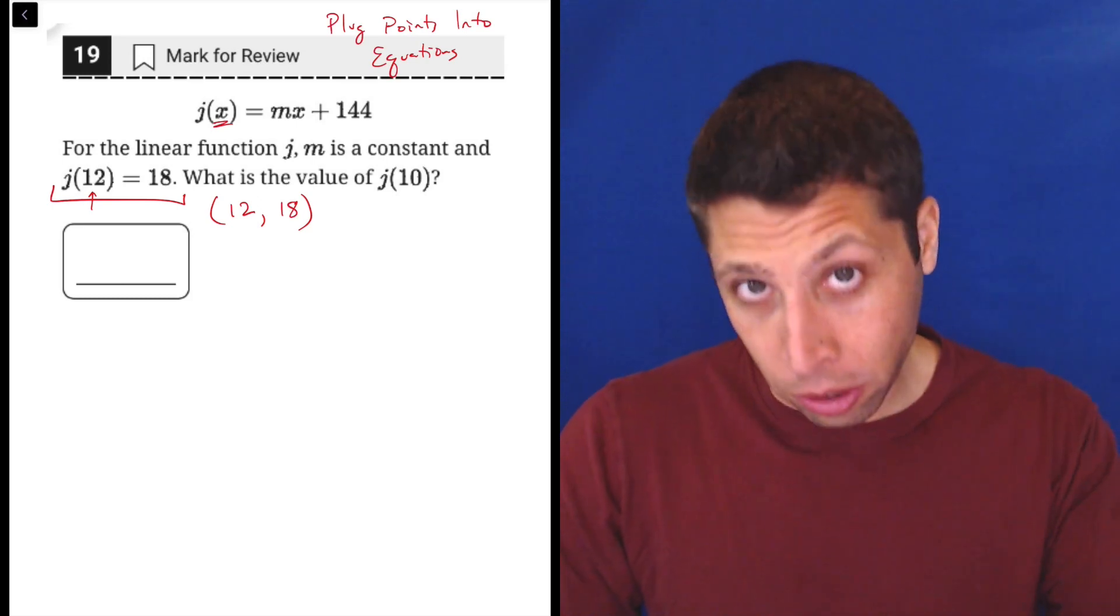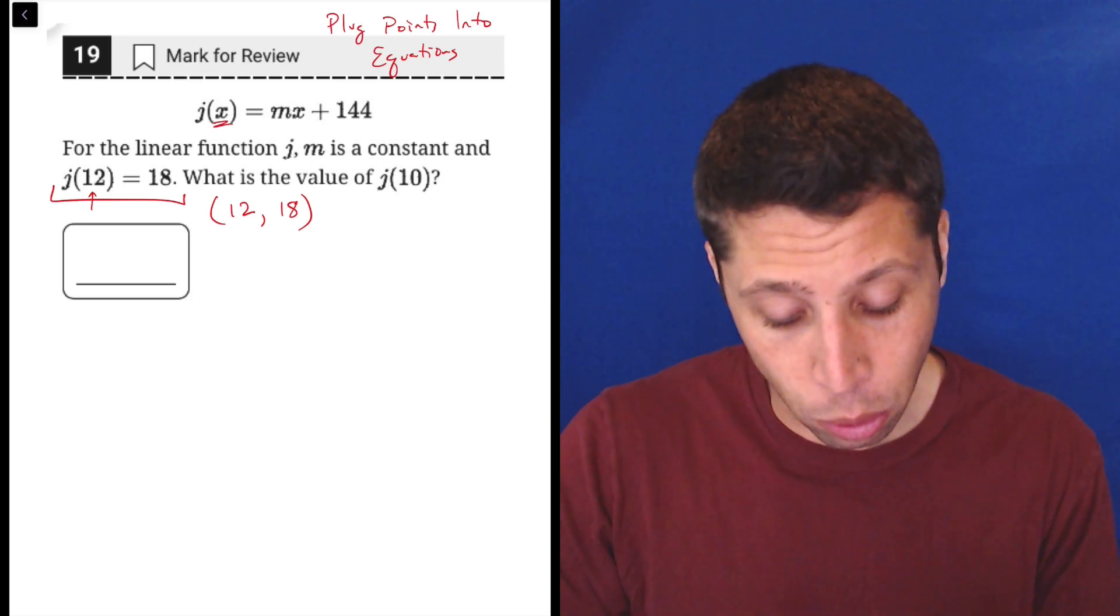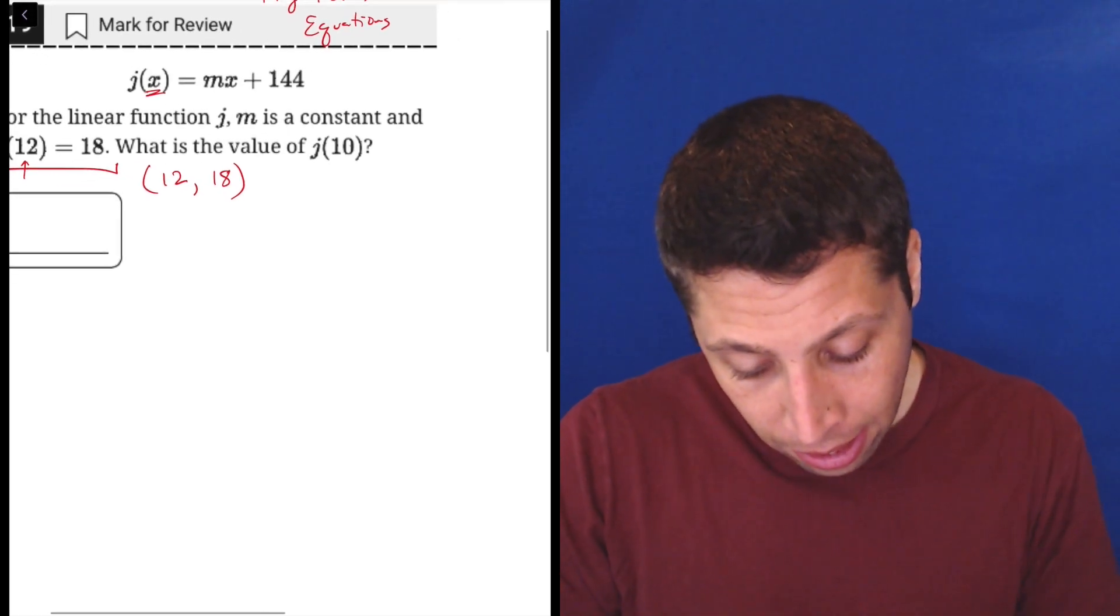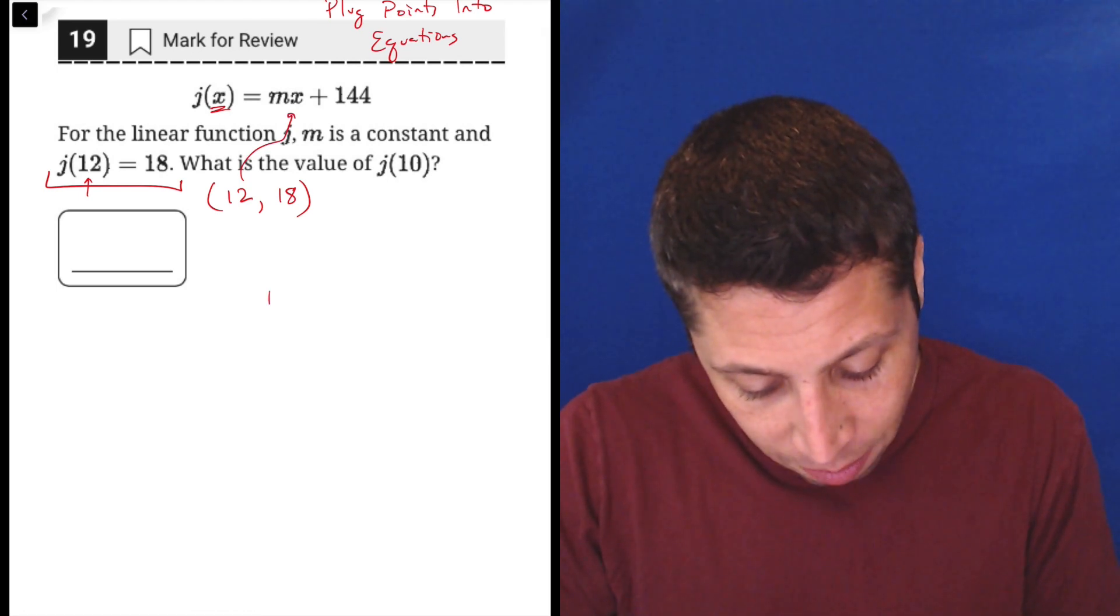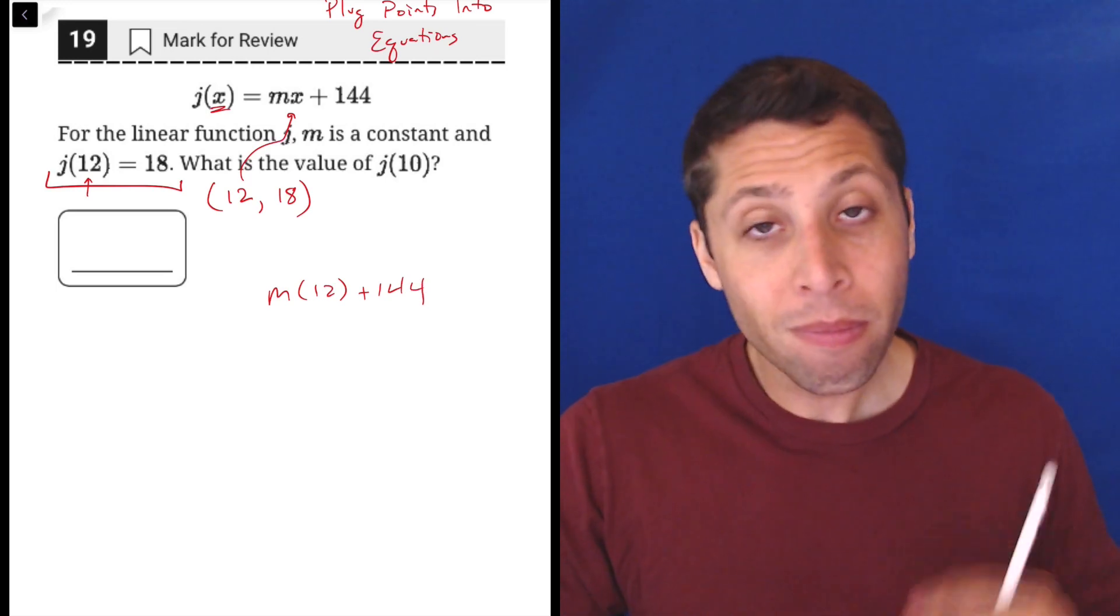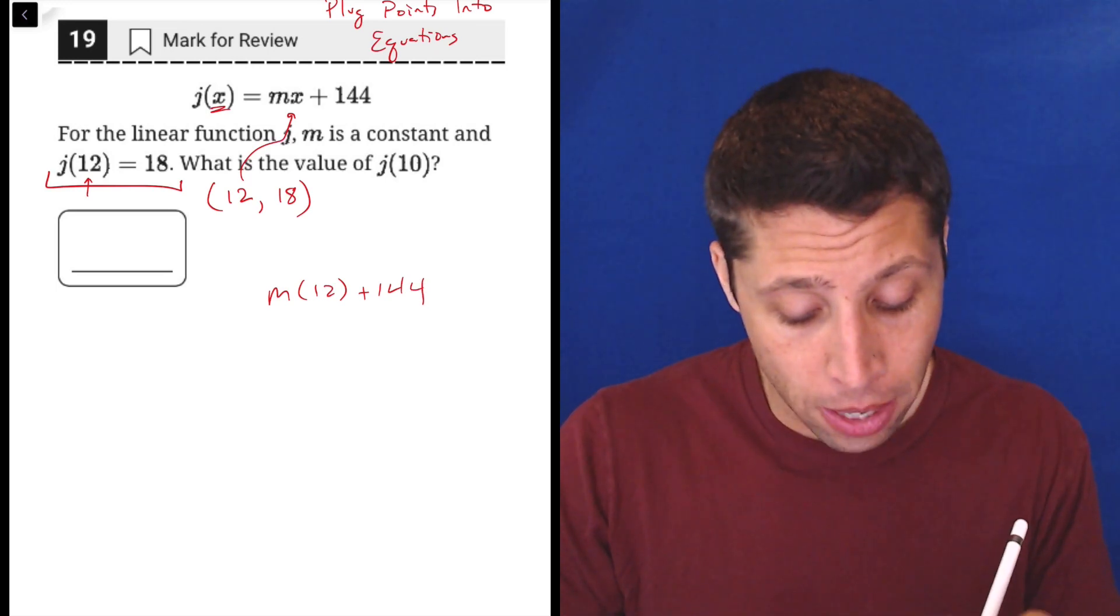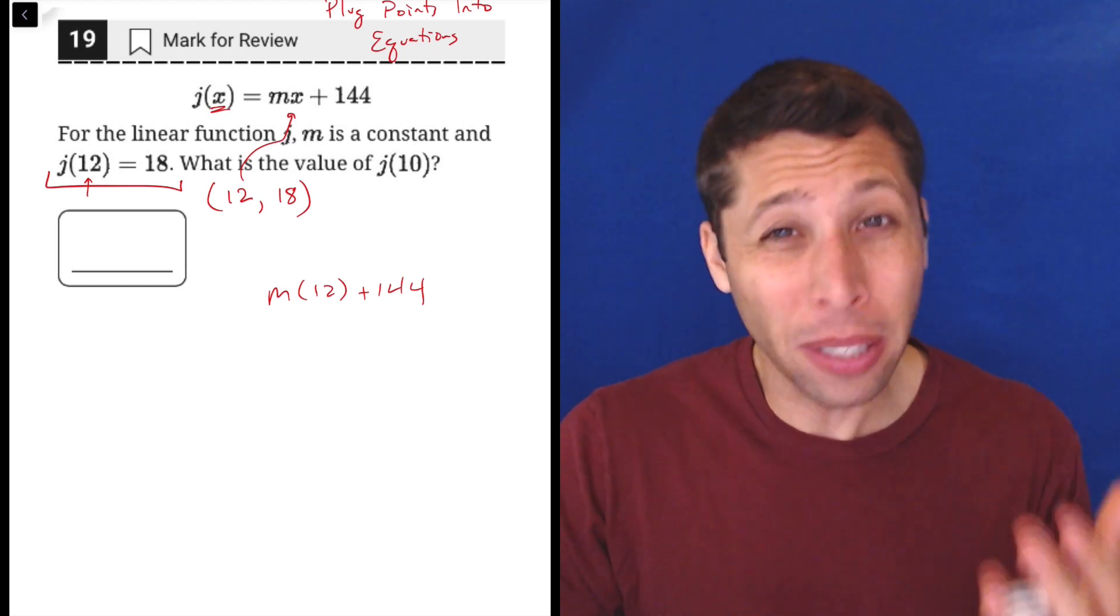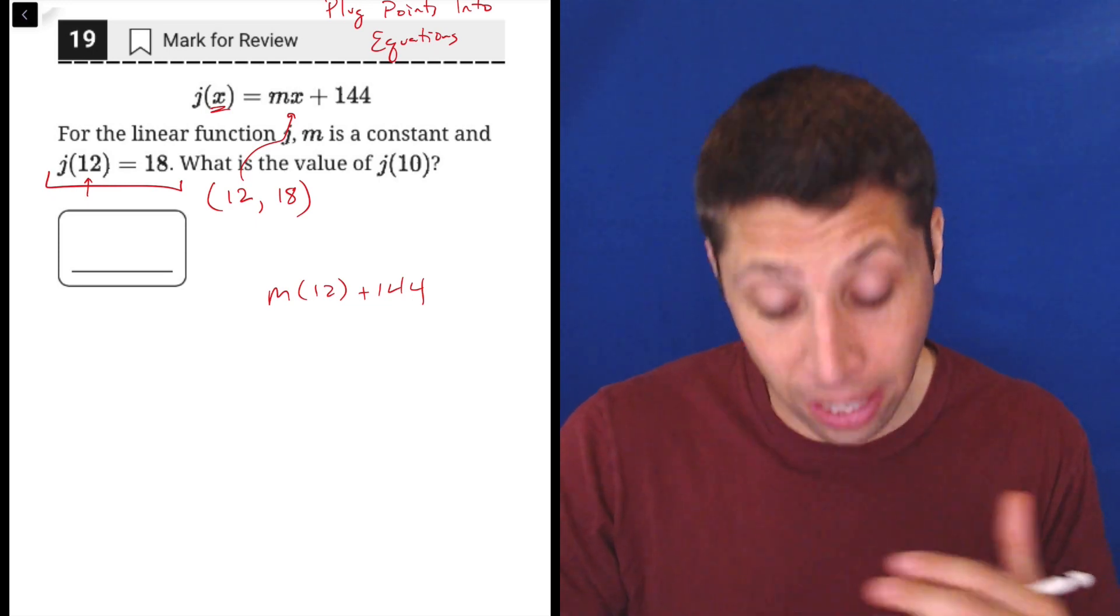So basically what we want to do is we want to plug that point, 12, 18, into this equation, and we've got three things that are missing. So the x is easy. Let's plug the 12 in for that x there. So that's going to give me m times 12 plus 144. The 18 is the thing that people are going to have trouble with. Basically, out of habit or just like simplicity, you might want it to go in place of the m, but we don't know the m and that's kind of what we're trying to find.